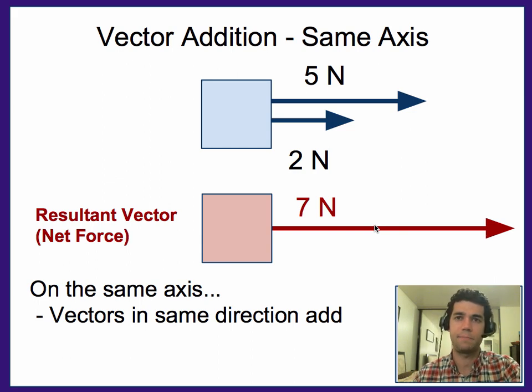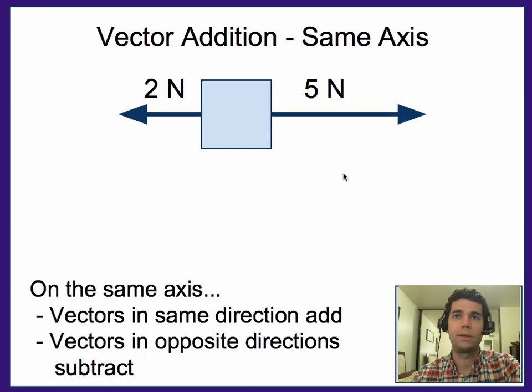Alright so that's what happens when they're in the same direction. What happens when they're in the opposite directions? Well if we've got five newtons going this way and two newtons going that way then things that are in the opposite directions cancel each other out either fully or partially. So in this case you can treat it as subtraction. So if you've got five this way and two that way you subtract those two and we get that we have a net or overall of three to the right.